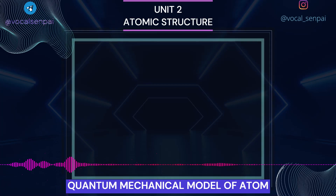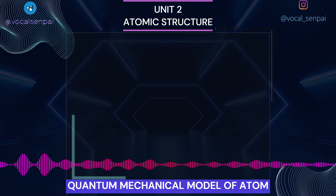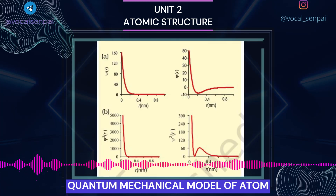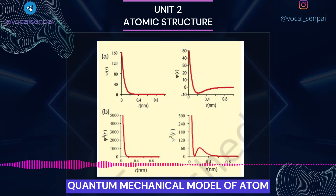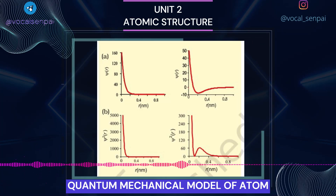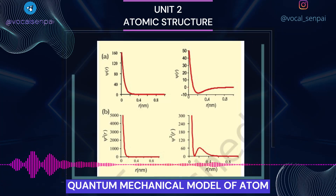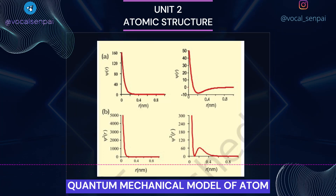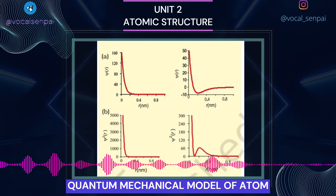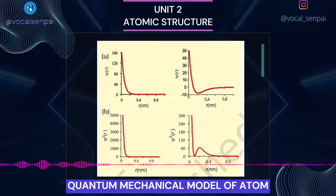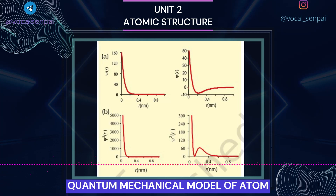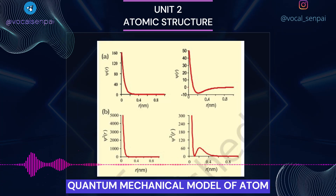Shapes of Atomic Orbitals: The orbital wave function ψ for an electron in an atom has no physical meaning — it is simply a mathematical function of the coordinates of the electron. However, for different orbitals the plots of corresponding wave functions as a function of r (the distance from the nucleus) are different. Fig. 2.12a gives such plots for 1s (n=1, l=0) and 2s (n=2, l=0) orbitals. According to Max Born, the square of the wave function, i.e., ψ², at a point gives the probability of finding the electron at that point.